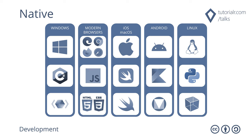Native development can be done on Windows using C Sharp and XAML with the Universal Windows Platform. For modern browsers like Edge, Chrome, Firefox, and Safari using JavaScript with HTML5 and CSS3. For iOS and macOS using Swift with SwiftUI. For Android using Kotlin with Google Material Design. And for Linux using Python with GTK.